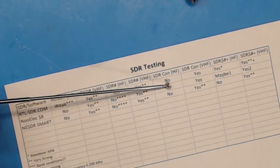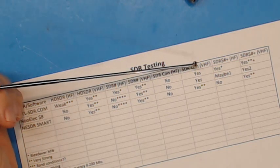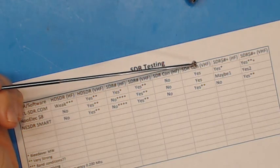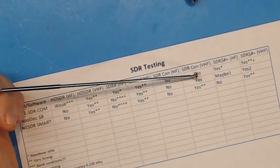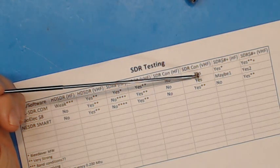SDR-Console, nothing received. SDR-Sharp, VHF, was working fine.